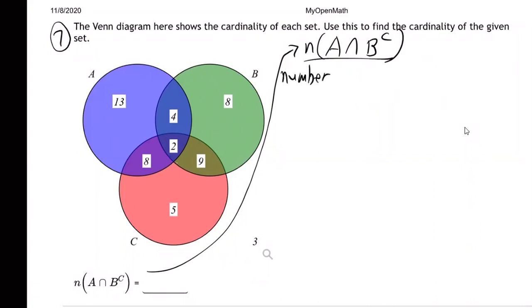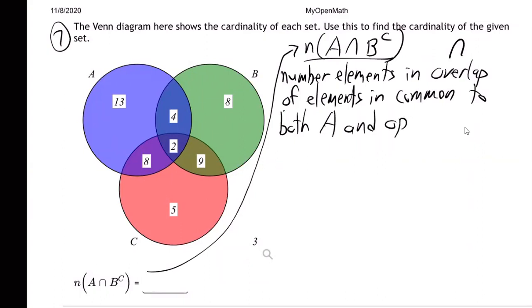So it's the number of elements in the overlap. That's the U turned over, the overlap of elements in common to A. Let me make this more clear, in common to both A and the opposite of B, the complement of B.